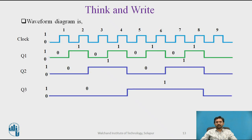In the waveform diagram, the output waveform of Q1 is given as the clock pulse to the second JK flip-flop. When Q1 goes from 1 to 0 transition, the state of Q2 changes. Also, when Q2 goes from 1 to 0 transition, the state of Q3 changes. The output of Q3 is the MSB, while Q1 is considered the LSB.